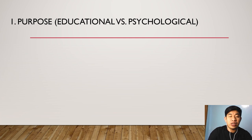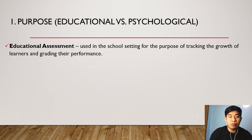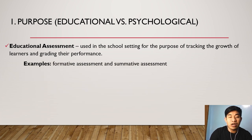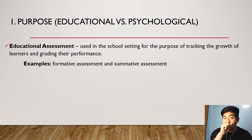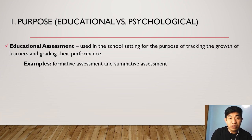The first classification is purpose. If we classify assessment as to purpose, we have two types: educational and psychological. When we say educational assessment or test, it is used in the school setting for the purpose of tracking the growth of learners and grading their performance. Examples of this are formative assessment and summative assessment. If a teacher gives a quiz to students in order to measure how much they have learned about the topic, that quiz can be considered an educational type of assessment because it tries to measure the student's understanding and mastery of the subject matter.